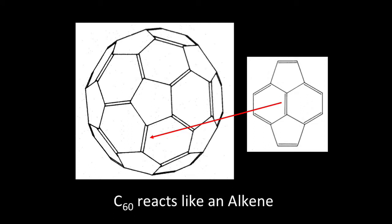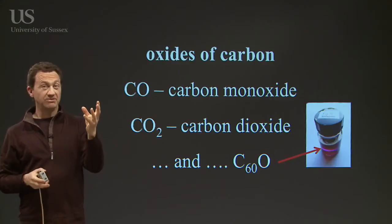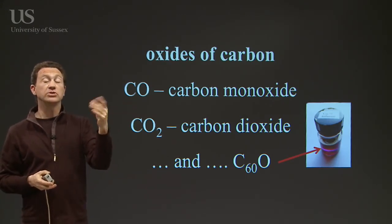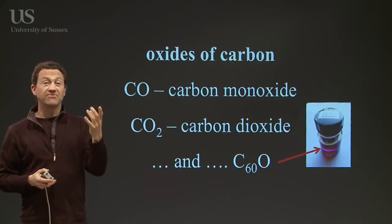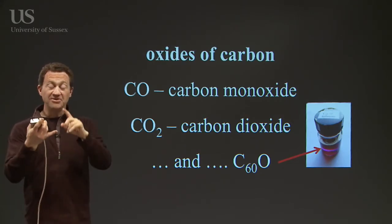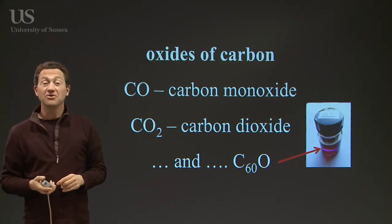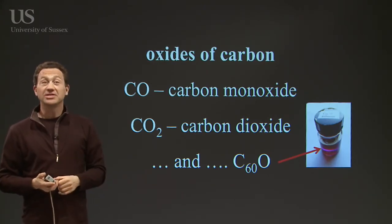The first interesting reaction is that C60 will actually react with oxygen. If you have a solution of C60 in toluene and you leave it on the shelf, there's a little bit of oxygen dissolved in that liquid and it starts forming C60O. So now you've got carbon monoxide, carbon dioxide, and C60O as an oxide of carbon.